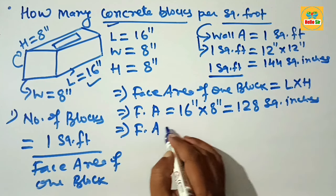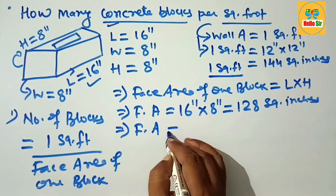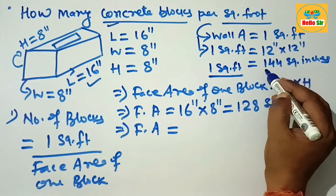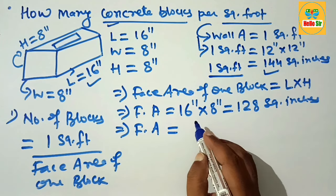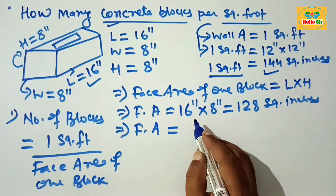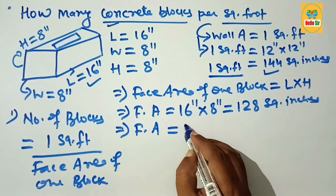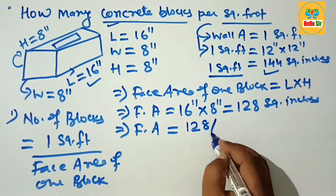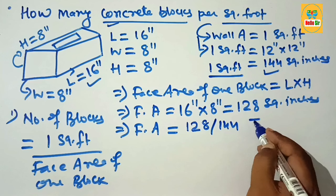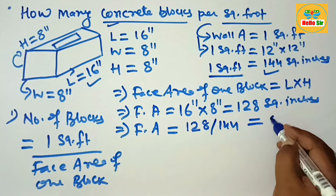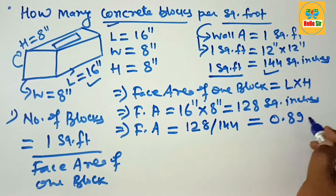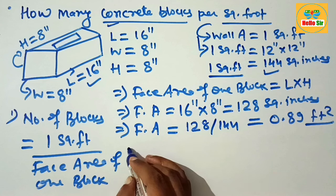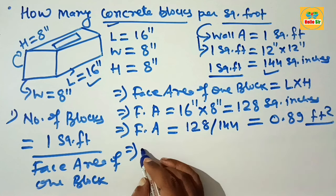Now convert the face area into square footage. Since one square foot equals 144 square inches, divide 128 by 144. This comes out to approximately 0.89 square feet — that is the face area of one concrete block in square footage.